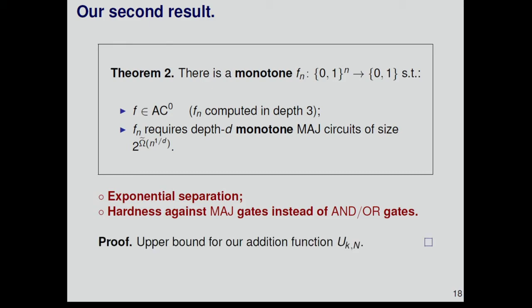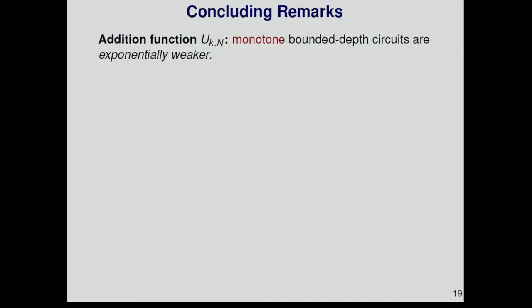How do we prove this result? We had this monotone function u_d,n, and we already know this function is hard for majority circuits of bounded depth. To get this theorem, what we do is we just mention the upper bound for this function. You can actually compute it for small values of k in depth 3. It means that even if you have only three layers of computation, if you use negations, you can have the exponential speed up for monotone functions.